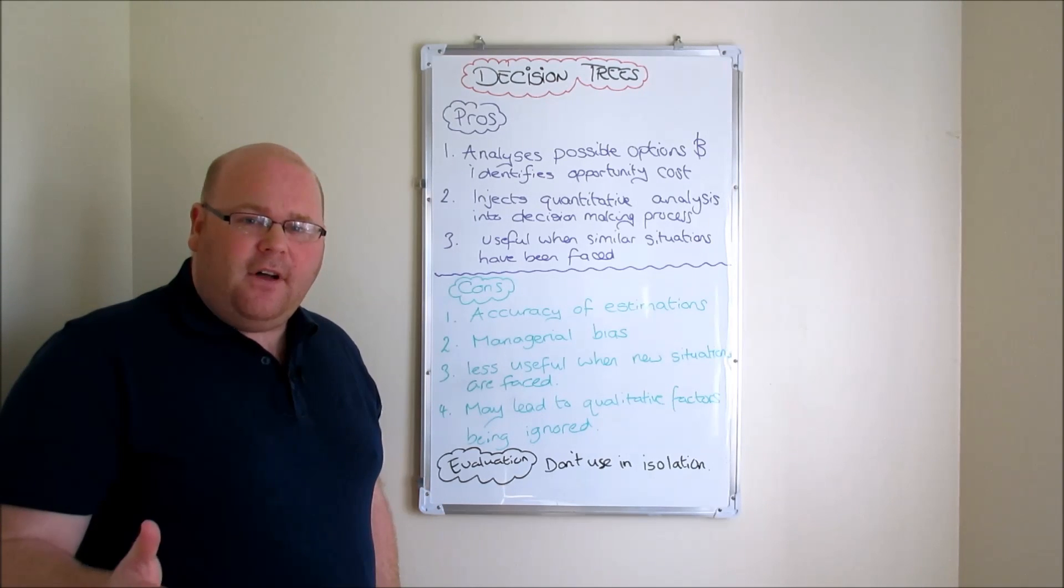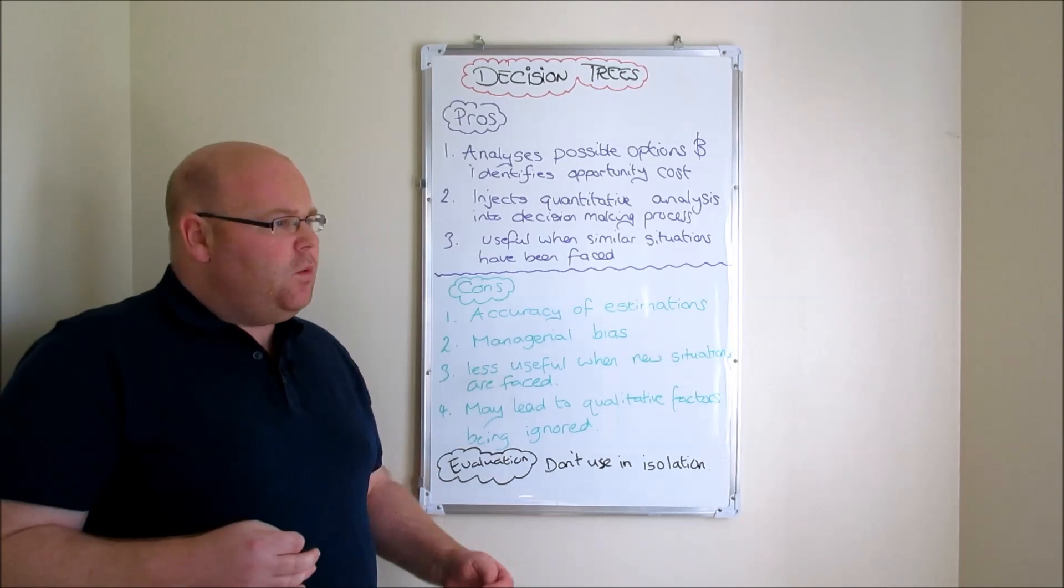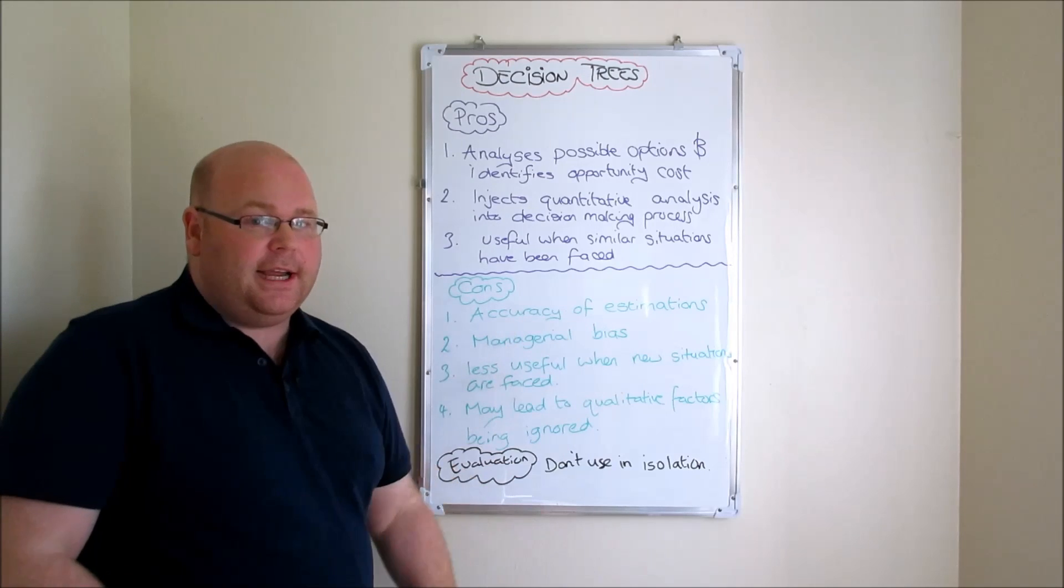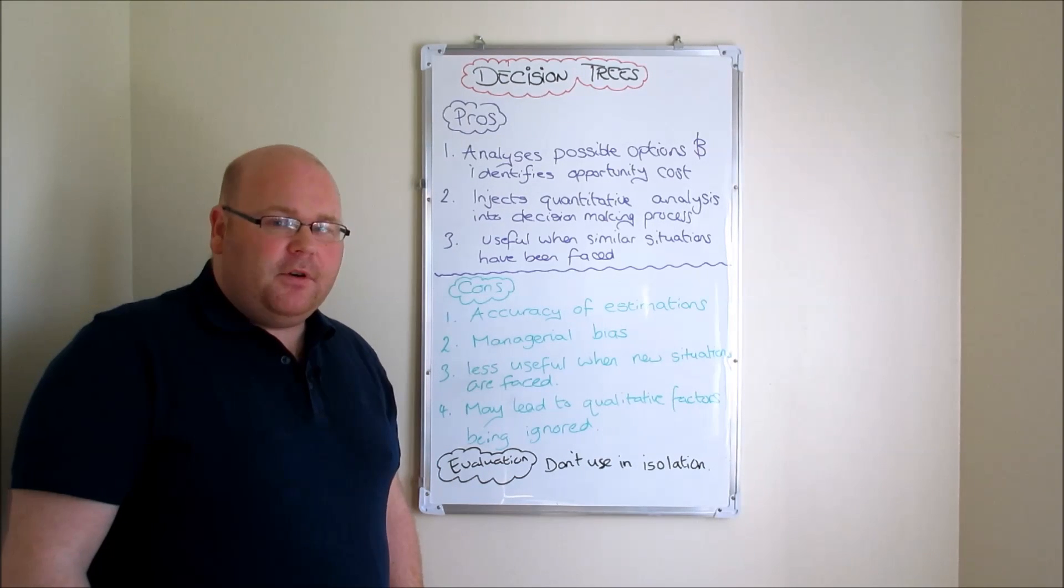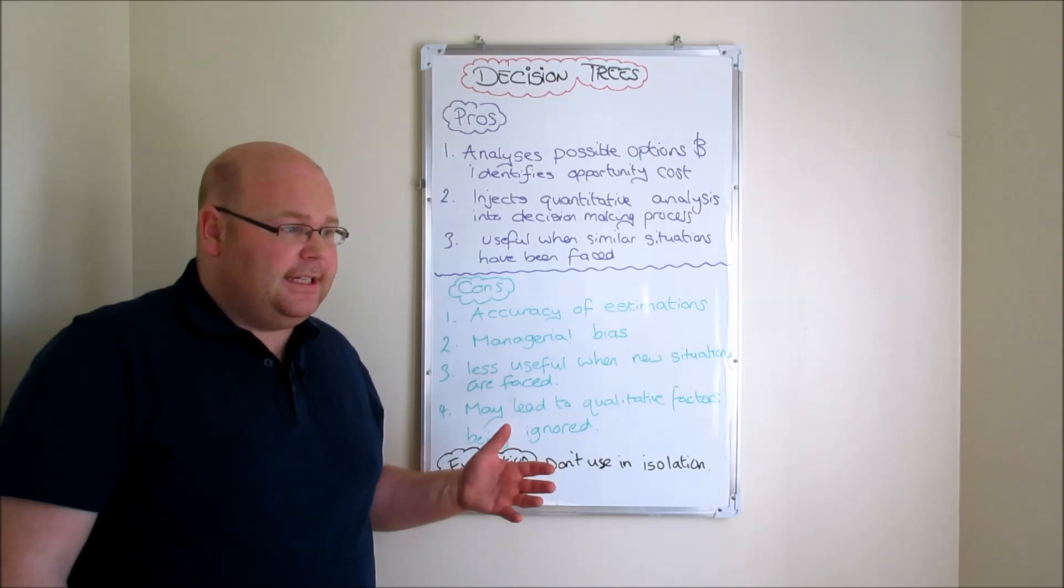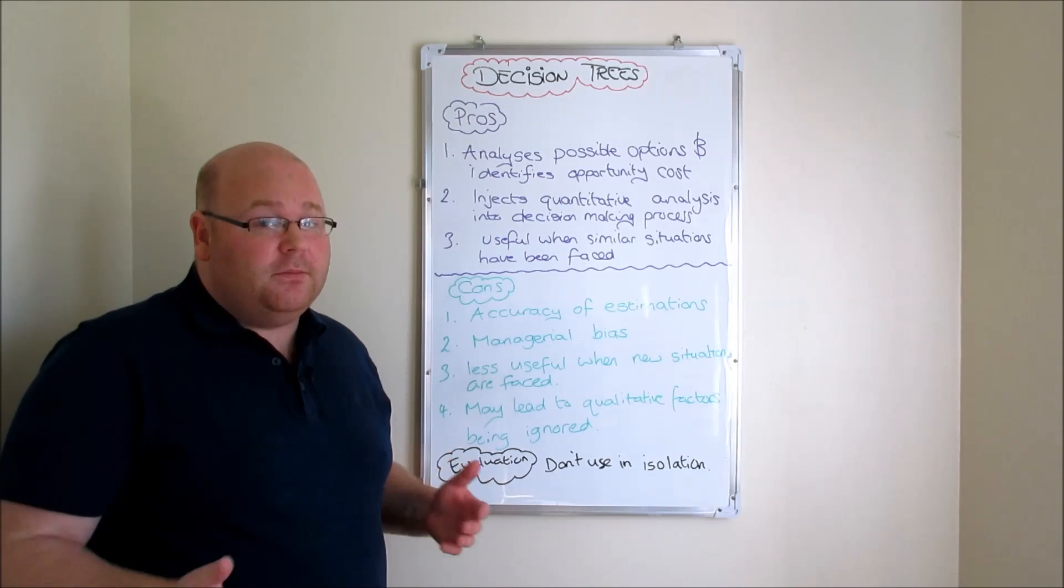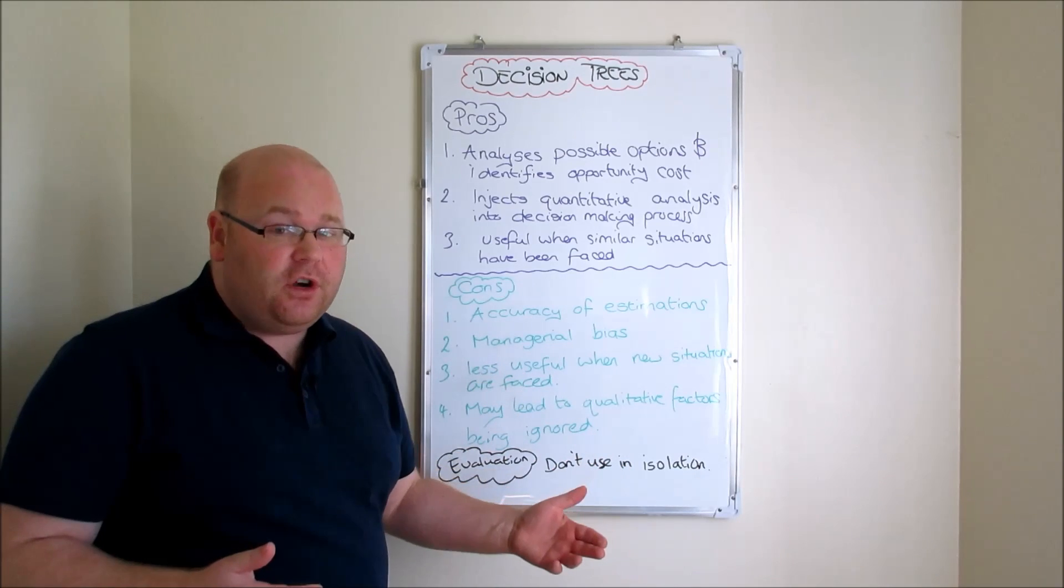So when we did our decision tree a year ago and we embarked on a project on the back of our decision tree, the external environment may have progressed from that time when we did the decision tree. There might have been a 0.7 probability of success, but events in the external environment could distort those probabilities. So even if they were accurate at the time of the construction of the decision tree, situations can change. So it's something to bear in mind.